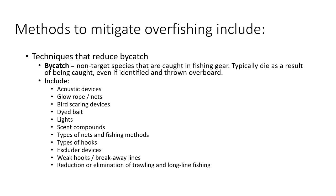Some ways to reduce bycatch: acoustic devices can deter species like dolphins that are sensitive to certain sounds, while your target species like tuna are not sensitive to those devices. Glow ropes or illuminated nets use a phosphorescent glow to startle organisms and keep them away — especially organisms that see in color, which most marine organisms do — while your target species hopefully aren't deterred.